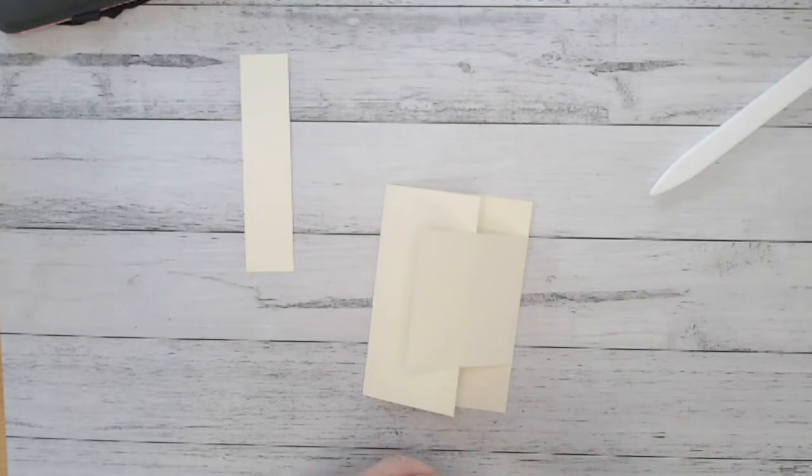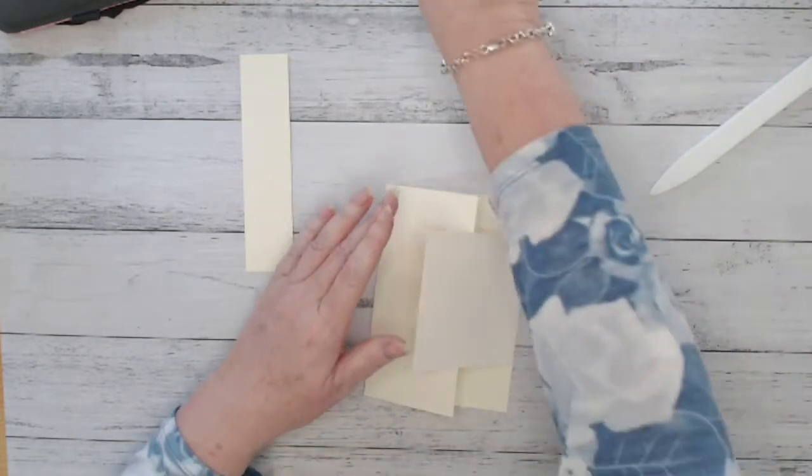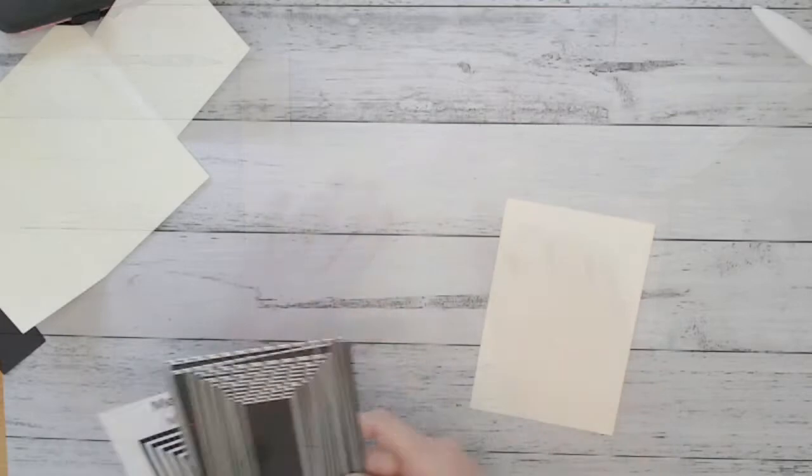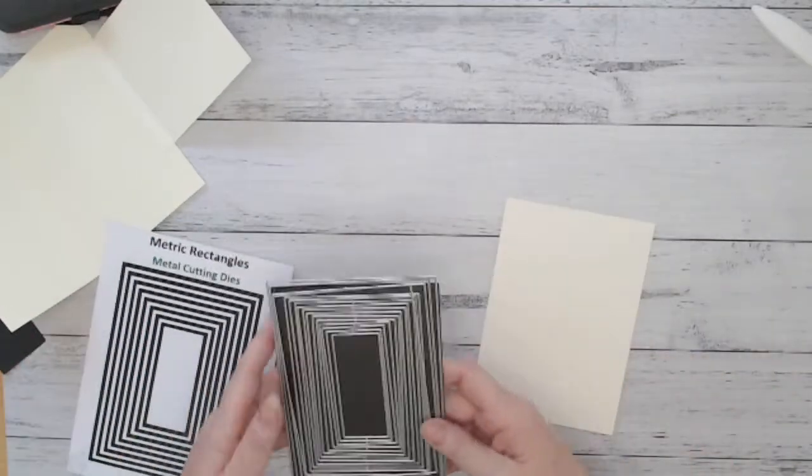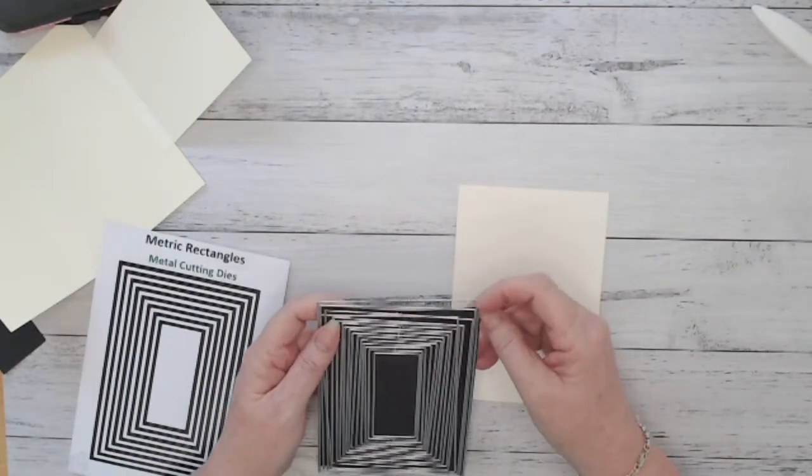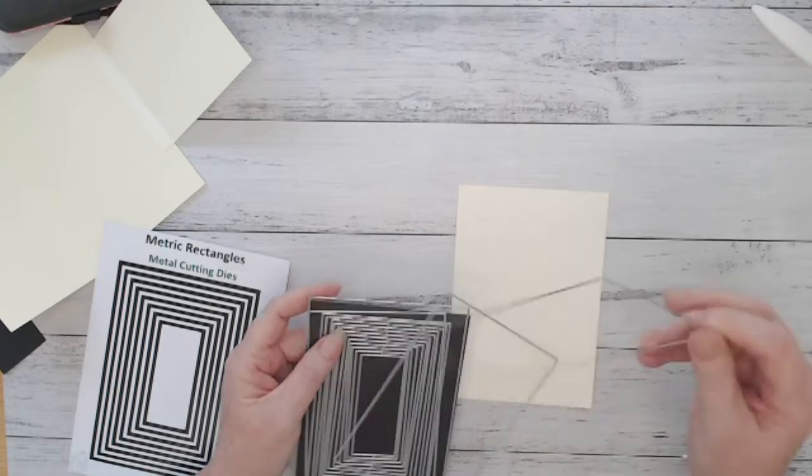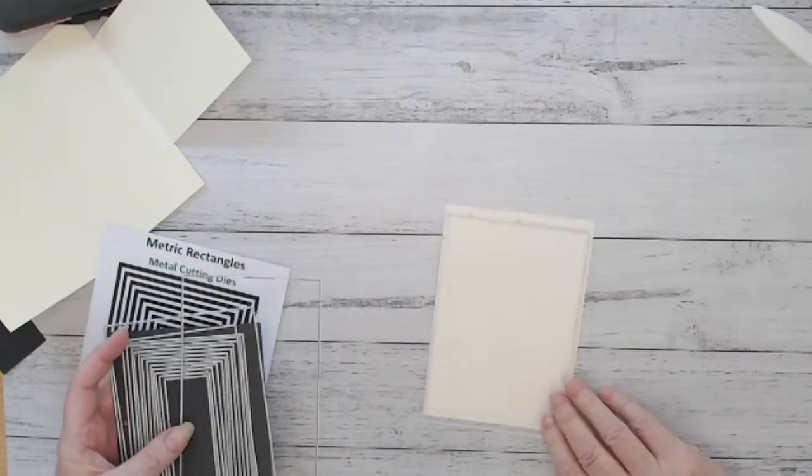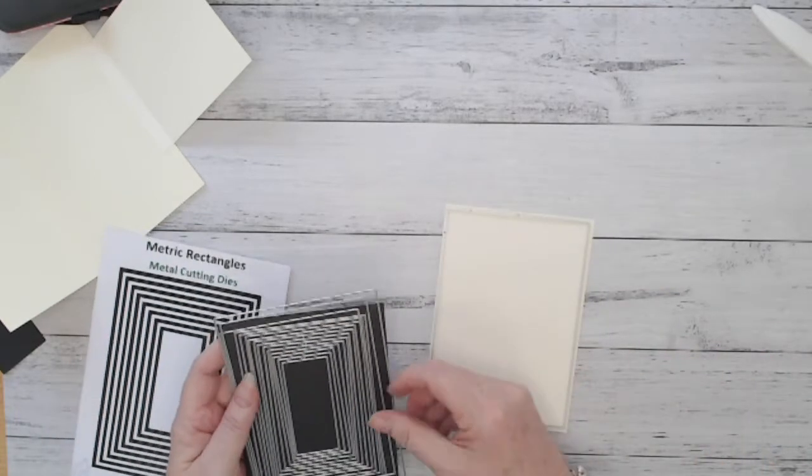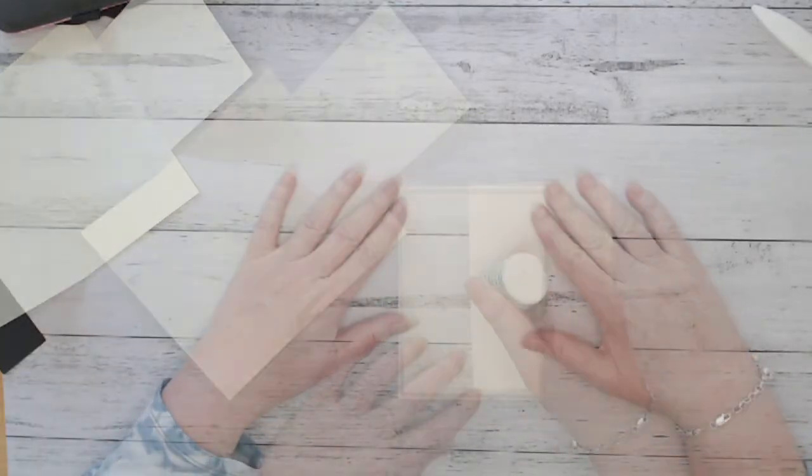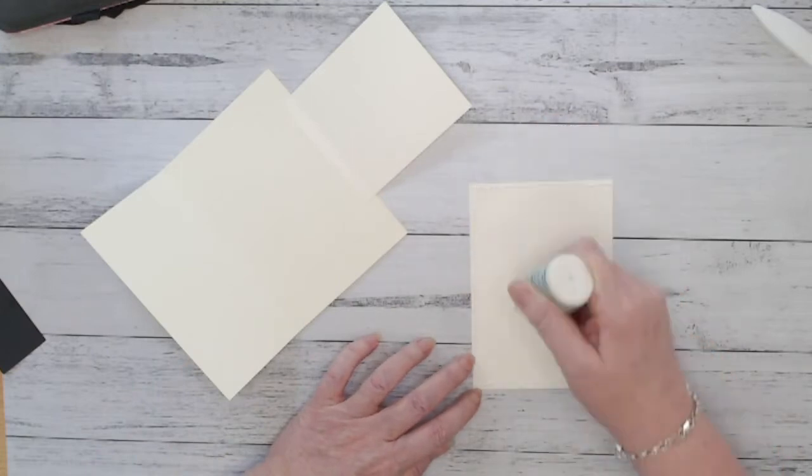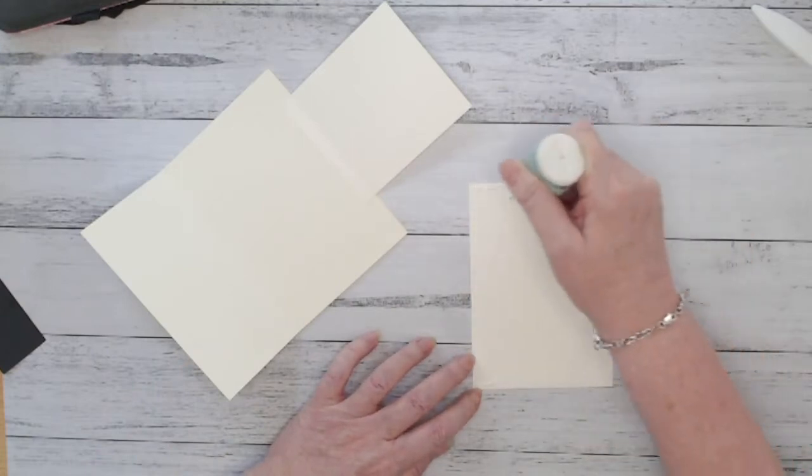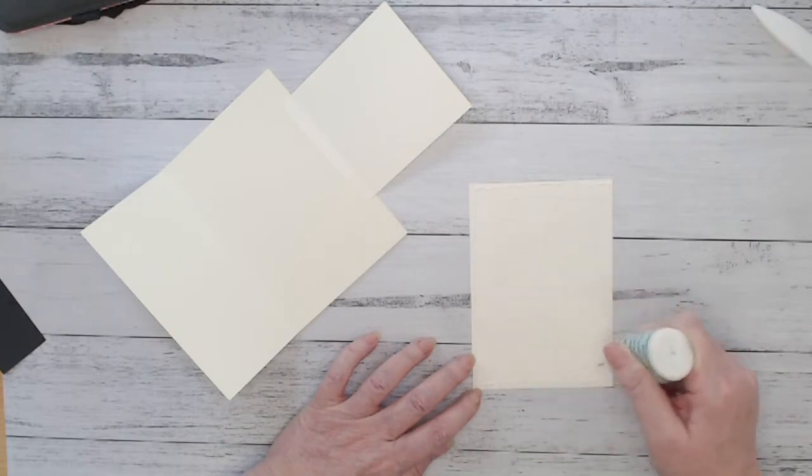Now I've got the rest of that other A5 piece of cardstock and I cut that in half, which gives me an A6 piece. I'm just using the second largest die in the metric rectangles to cut out the perfect piece that I'm going to glue inside. That's going to cover up where that join is and make it all really nice and secure.